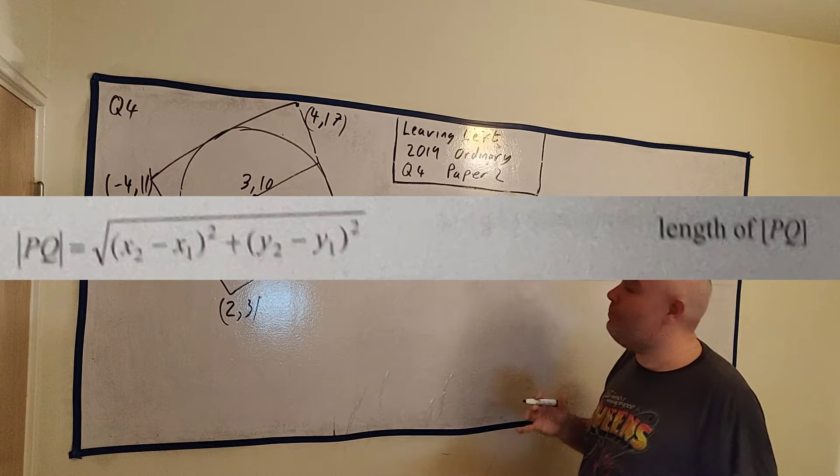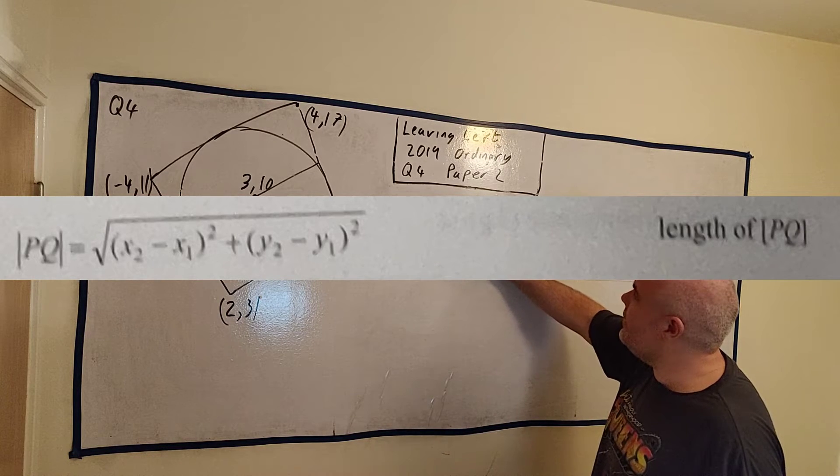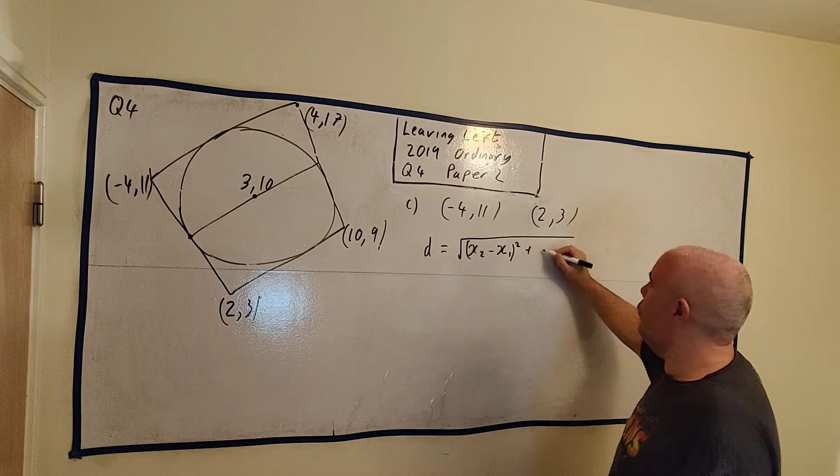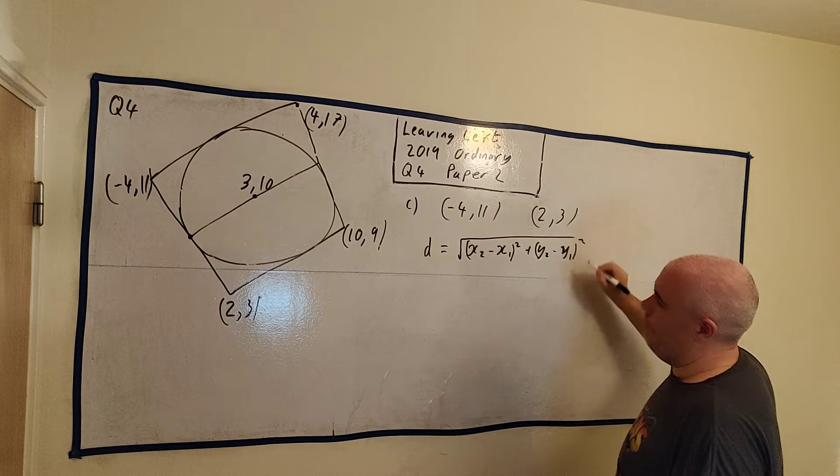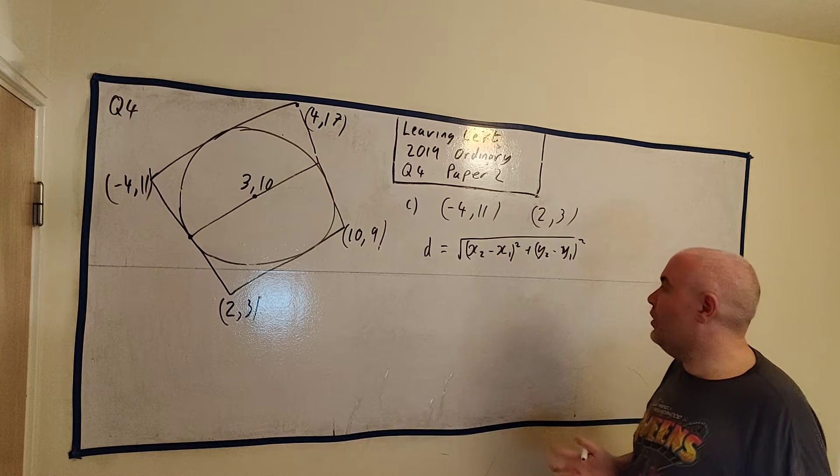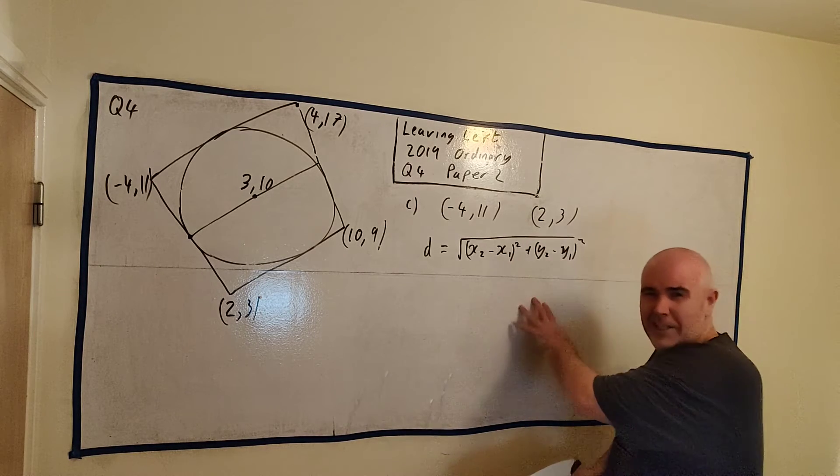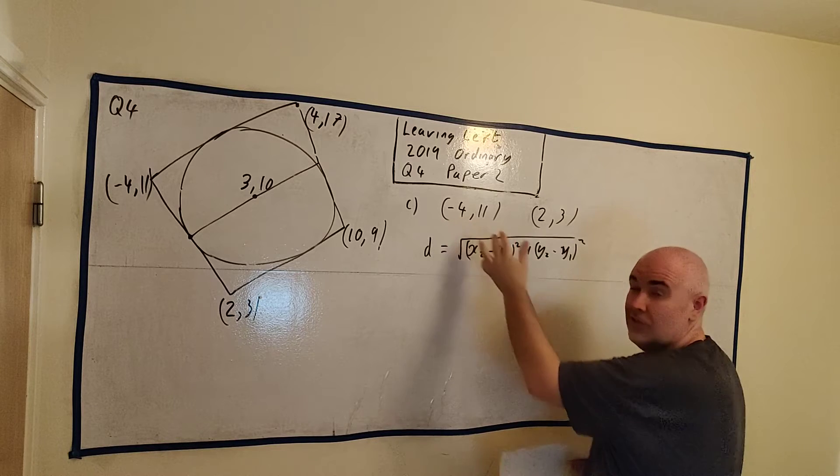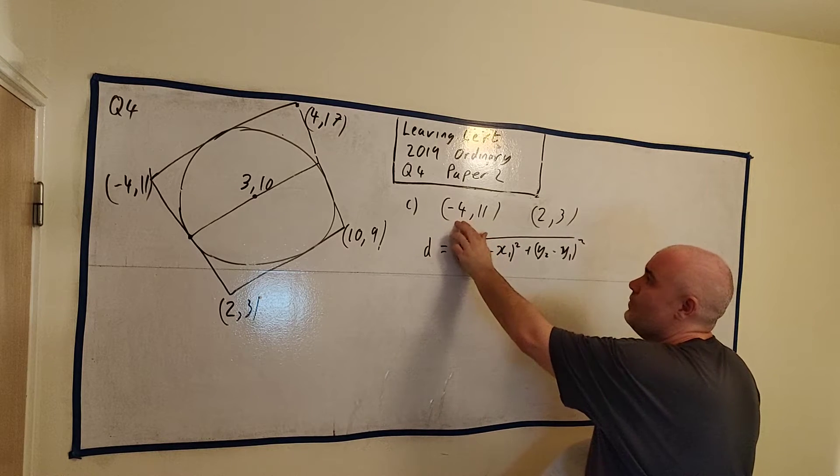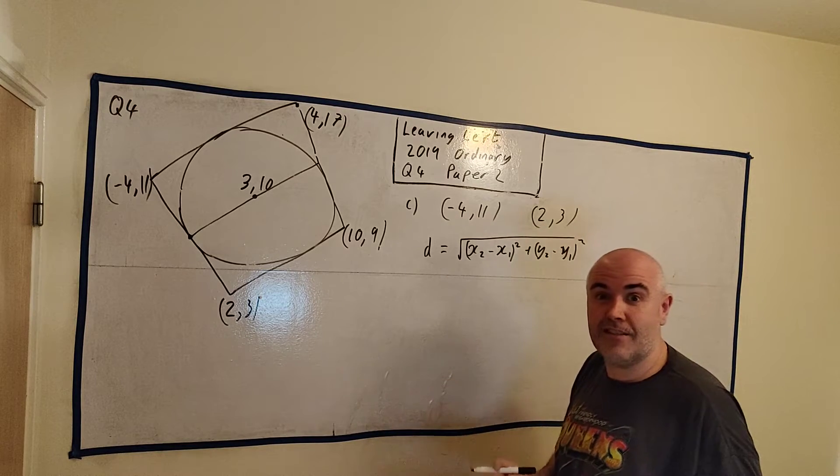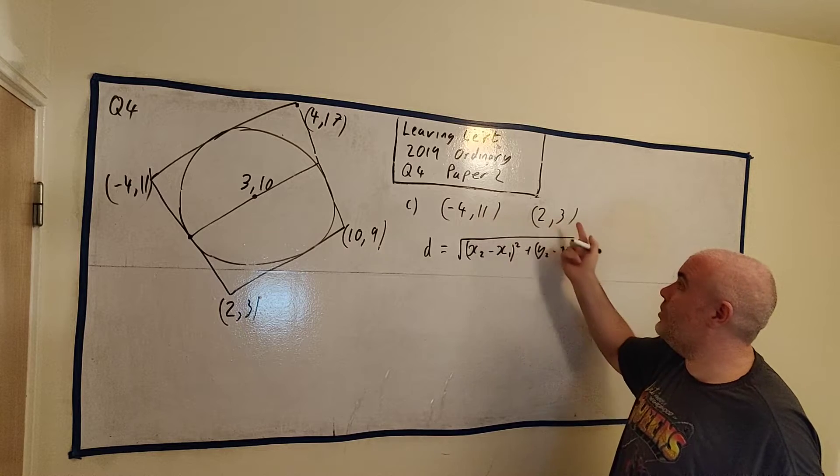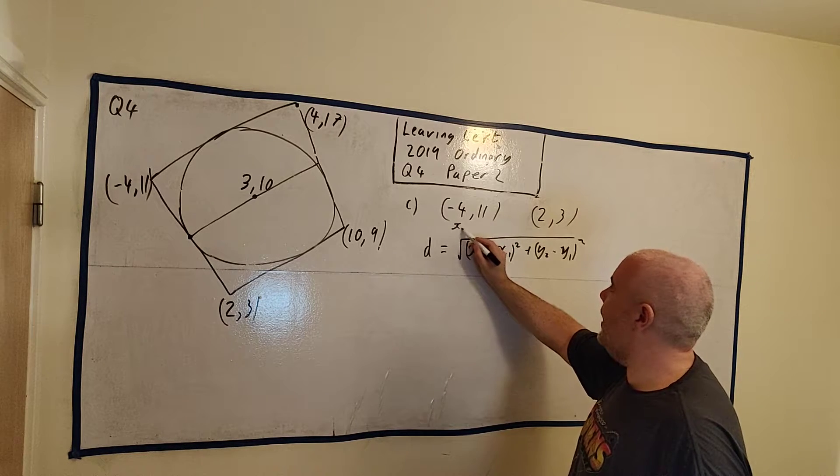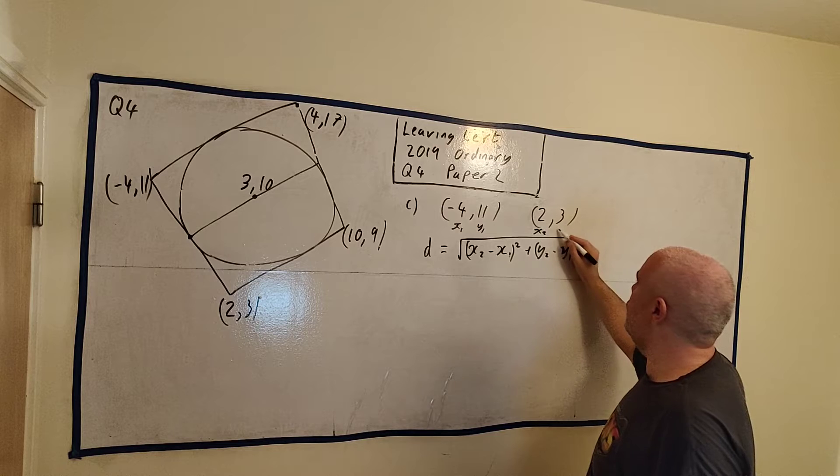They have it as the length between p and q. I'll simply write it as d. d is equal to the square root of x2 minus x1 squared, plus y2 minus y1 squared. So again, you have this formula in your book, so it should be easy to get that, but I don't really use this either. I don't think of this formula. I think the distance between the x's - the distance between minus 4 and 2 is 6 - and the distance between 11 and 3 is 8. Let's write some of these out here: x1, y1, x2, y2.